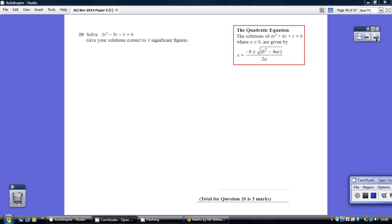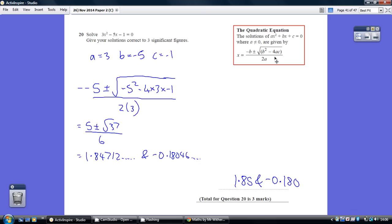Okay, number 20. So we're having to solve a quadratic equation. The first thing to note is that we're being asked to give you a solution correct to three significant figures, so going into decimals. So that suggests that it's not going to factorise. So we're going to have to rely on the quadratic equation which is given.